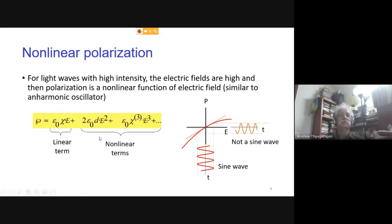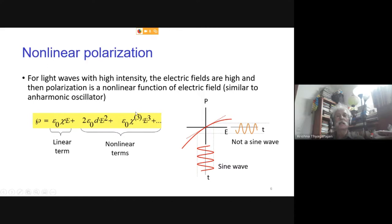As an analogy, for a simple pendulum at small oscillations the time period is independent of amplitude — simple harmonic motion. But if you increase the amplitude to 30 or 45 degrees, the motion is periodic but no longer harmonic, and the period depends on amplitude. Similarly, with strong electric fields, you must account for these nonlinear terms. This E² term is called the second-order effect with susceptibility χ₂, and the E³ term is the third-order effect with χ₃. Plotting P vs E gives a curved line rather than a straight one.